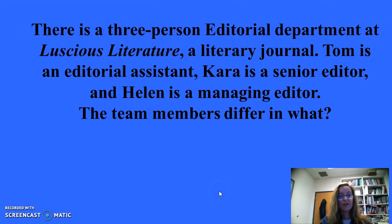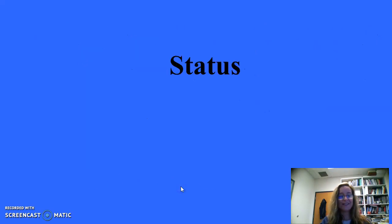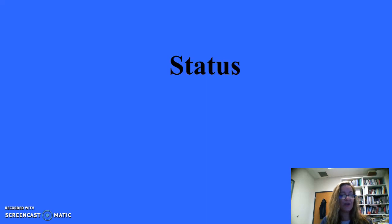For 300: There is a three-person editorial department at Luscious Literature, a literary journal. Tom is an editorial assistant, Kara is a senior editor, and Helen is a managing editor. The team members differ in what? The answer is status. Status is one's position or rank in a group and can be used to influence the behavior of group members — those who follow the rules of the people in power will be rewarded.